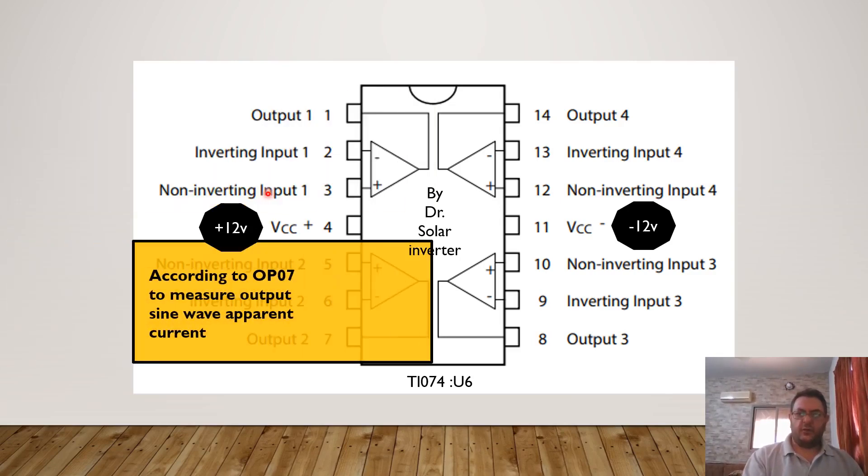The second one, according to the output of the IC OP07 from the big board, these two op-amps are used to measure the output sine wave apparent current.